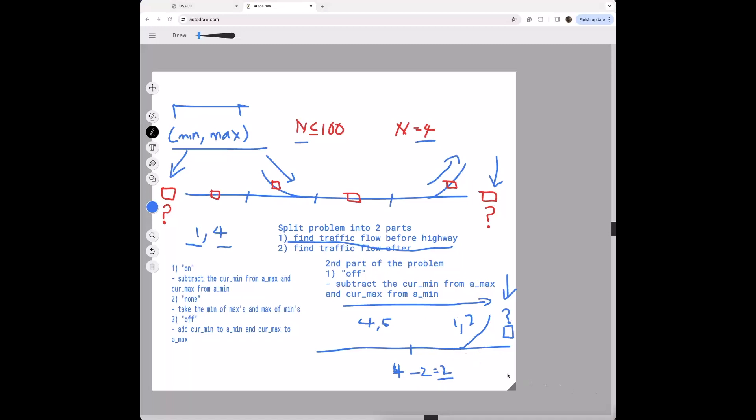And then we're going to take a max, which is five minus ker min, which is one. And that's four and four is the maximum amount of traffic flow there can be after this point. So yeah, that's the logic behind this.